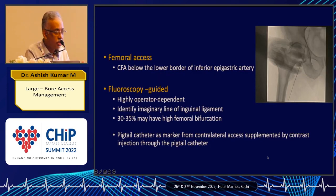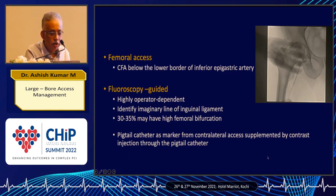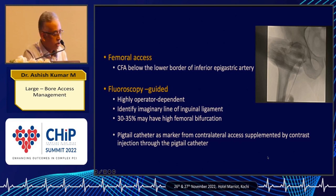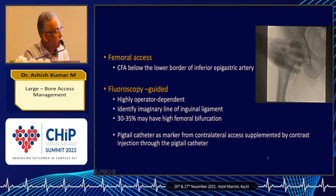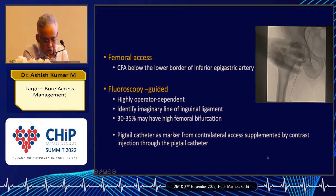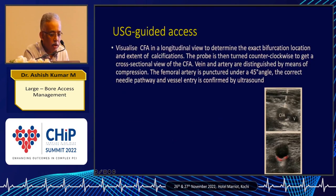For most of these large bore accesses, we use a femoral artery. It can be fluoroscopy-guided, but the problem with fluoroscopy guidance is it's highly operator dependent. Close to one-third of patients have a high femoral artery bifurcation, so very often you require a marker such as a pigtail catheter from the contralateral access, supplemented by a contrast injection to guide you to puncture the common femoral.